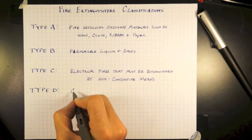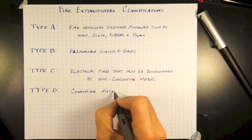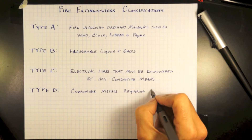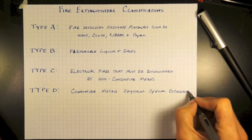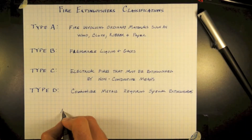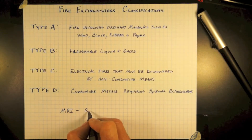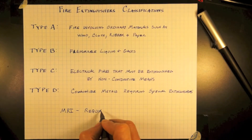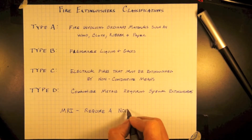Type D fire extinguishers are for combustible metals requiring special extinguishers. As it relates to MRIs, they require a non-ferrous type fire extinguisher housing the material. Non-ferrous is non-magnetic.